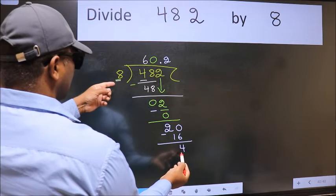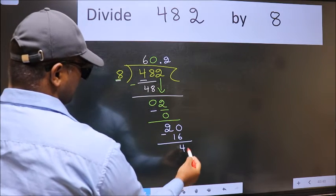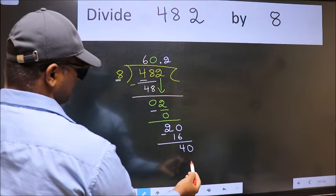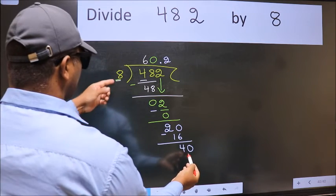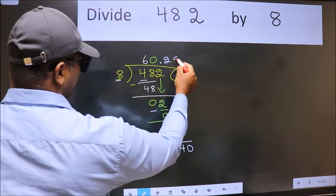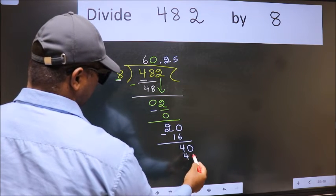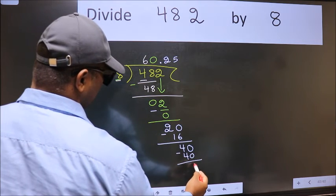4 is smaller than 8, and we already have the decimal, so directly take 0. So 40. When do we get 40 in the 8 table? 8 times 5 is 40. Now we subtract. We get 0.